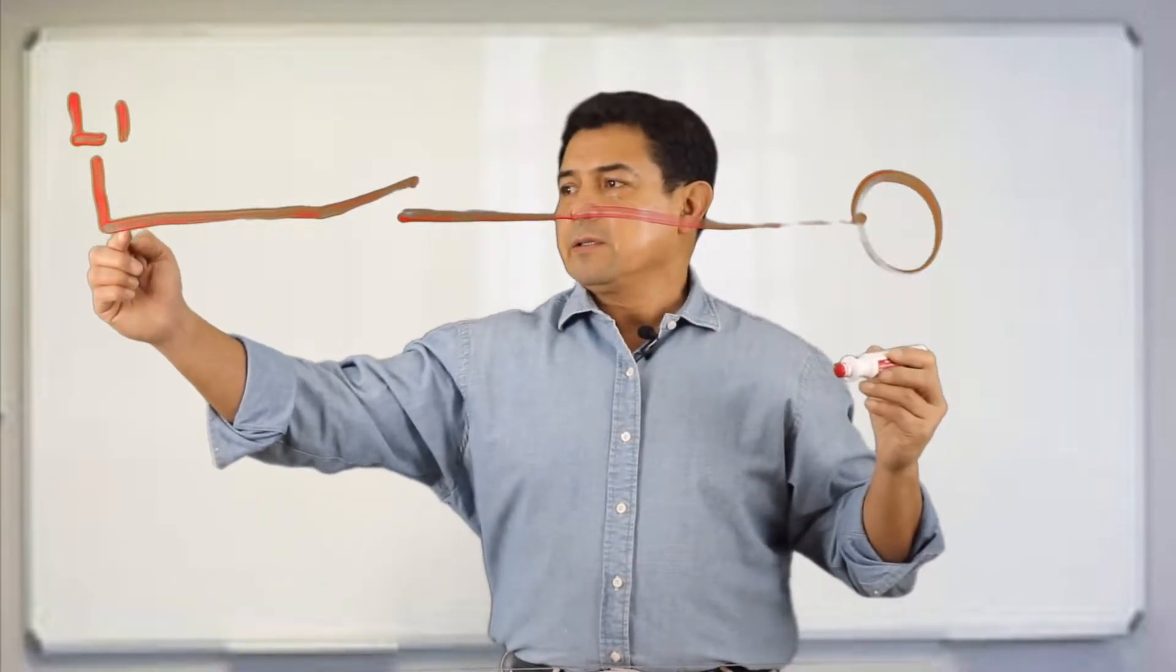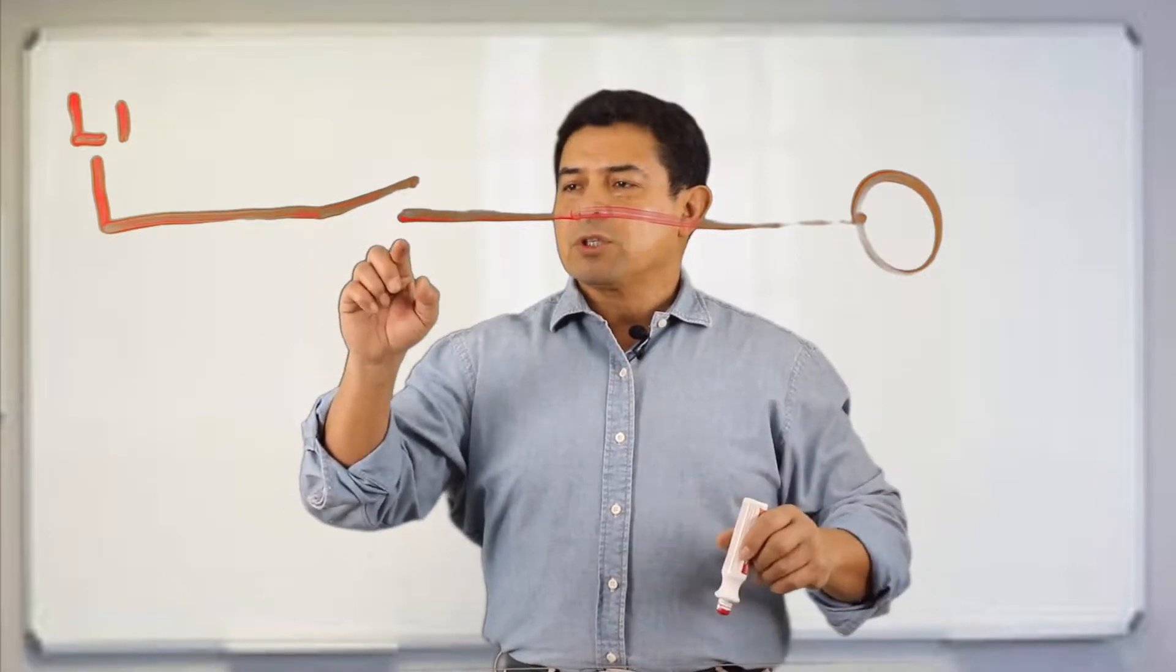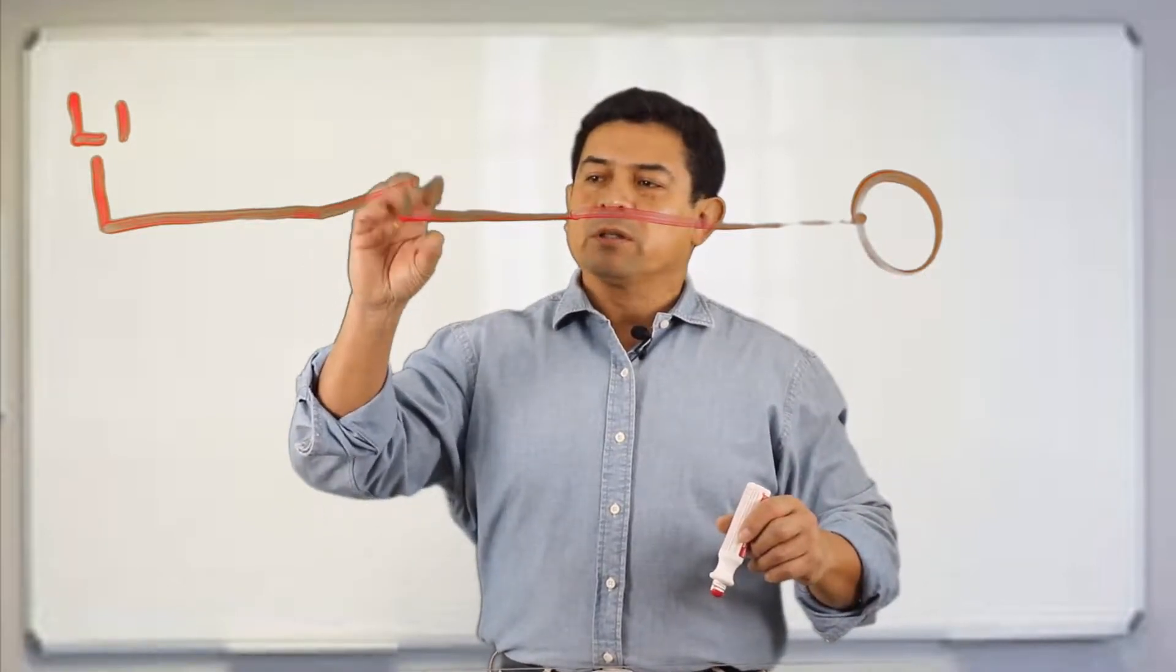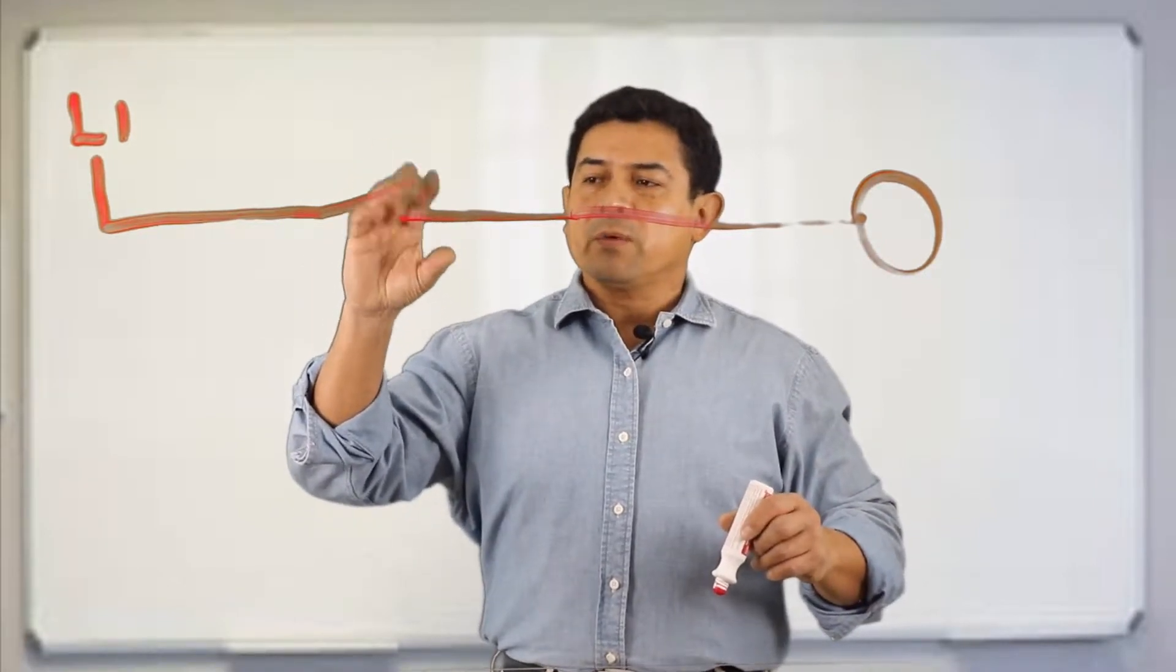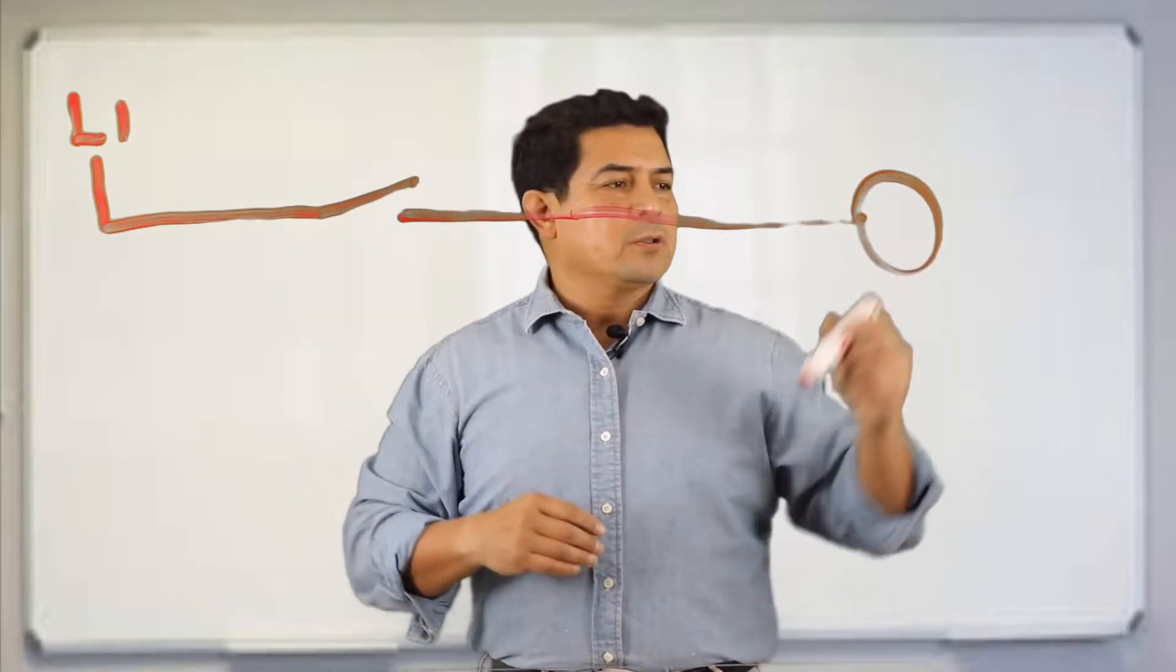So power is going to come in here, travel through here, through this wire. The switch is going to open and close so that we can have flow or not have flow. Then we're going to go to the load.